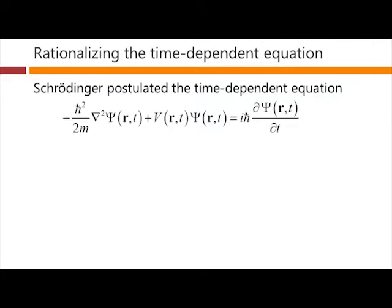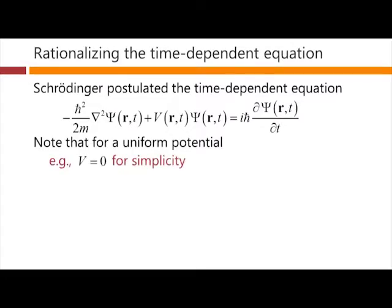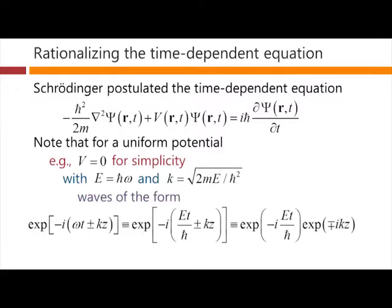So Schrödinger postulated the time-dependent equation in this form. The left-hand side looks just like what we had before for the time-independent part, except now our wave function is a function of position and time. But the right-hand side looks quite different: instead of E times psi, which we had for the time-independent equation, we've written i h-bar dpsi/dt. For a uniform potential, choosing V equals 0 for simplicity, with E equal to h-bar omega and k equal to sqrt(2mE)/h-bar, waves of the form e to the minus i(omega t) plus or minus kz are indeed solutions — corresponding to plane waves.